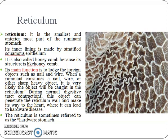Reticulum is the smallest and anterior-most part of the ruminant stomach. Its inner lining is made of stratified squamous epithelium, and the structure of reticulum is just like the honeycomb, so it is also called the honeycomb. The main function of reticulum is to lodge foreign objects such as nails and wire. When a ruminant consumes a nail, wire, or any other sharp or heavy object, it is very likely that the object will be caught in the reticulum. During normal digestive tract contractions, this object can penetrate the reticulum wall and make its way to the heart, where it can lead to hardware disease. The reticulum is sometimes referred to as the hardware stomach.